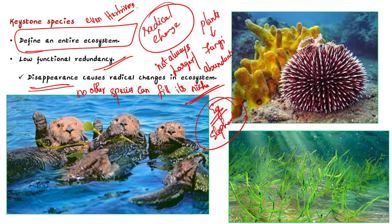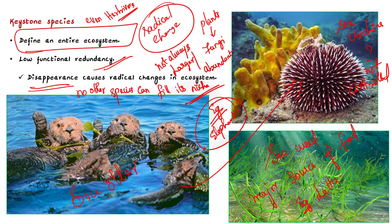Another example of a keystone species is the sea otter. It feeds on sea urchins, which are typically small, spiny, and round organisms, and thus the sea otter controls the sea urchin population. If the sea urchin population is not controlled, it would eat up the seaweed, which is a major source of food for the ecosystem. Seaweed here refers to macro algae like sea lettuce or green algae. Without the sea otter, the entire marine ecosystem will be damaged.